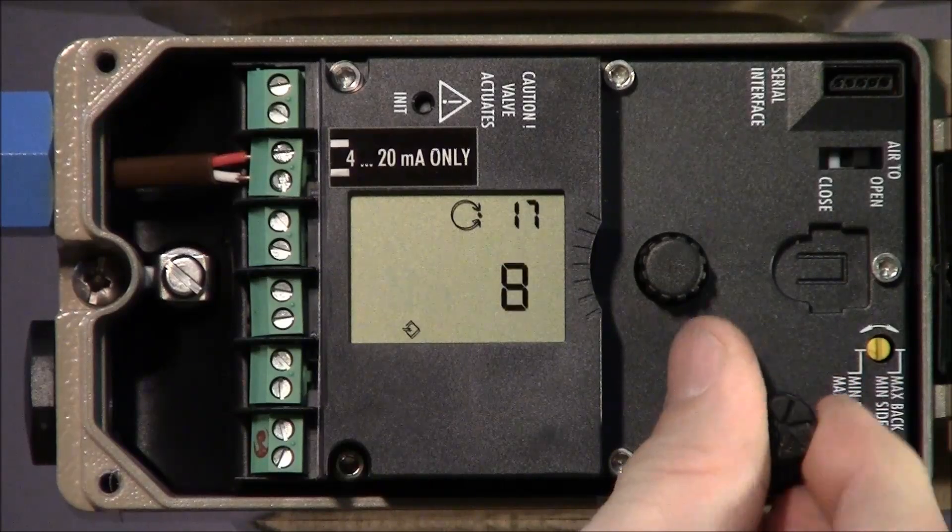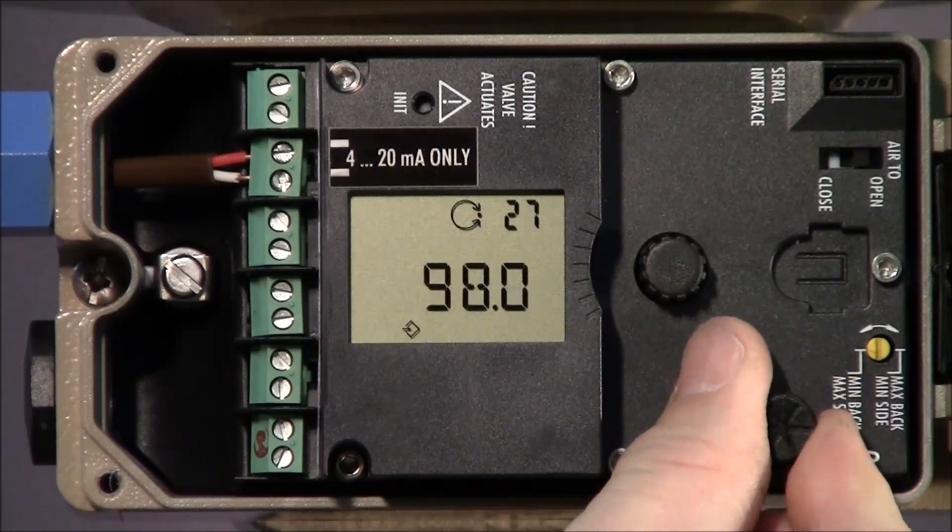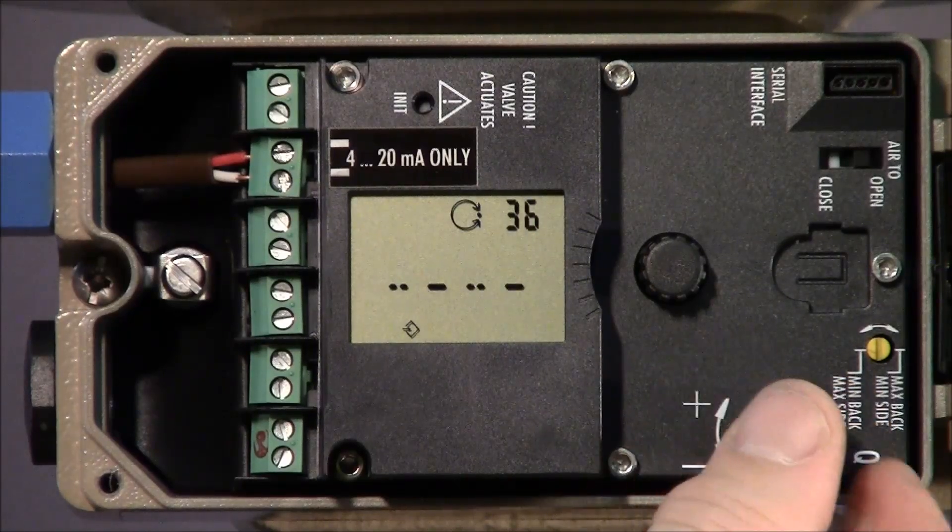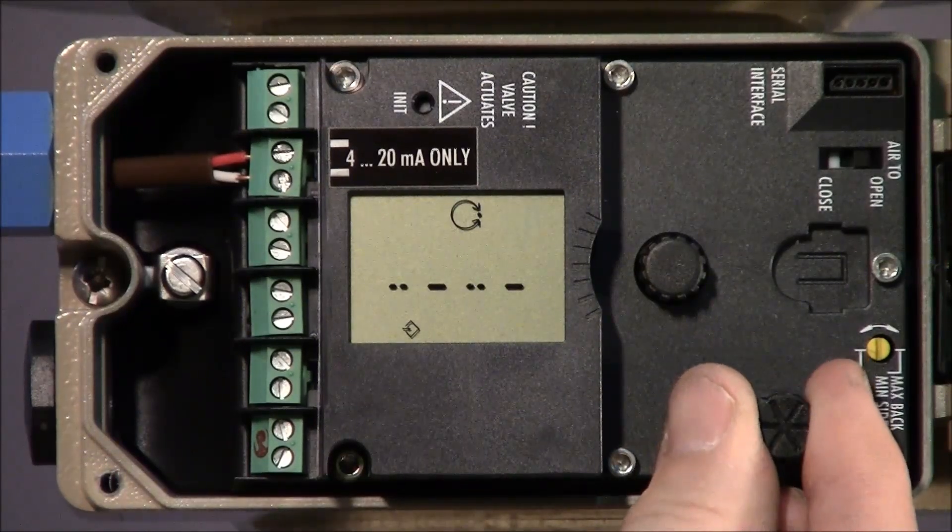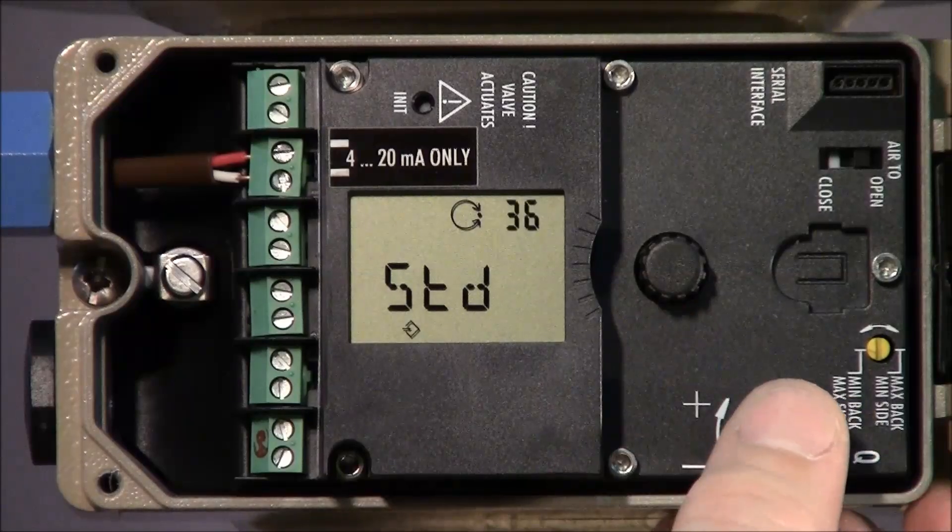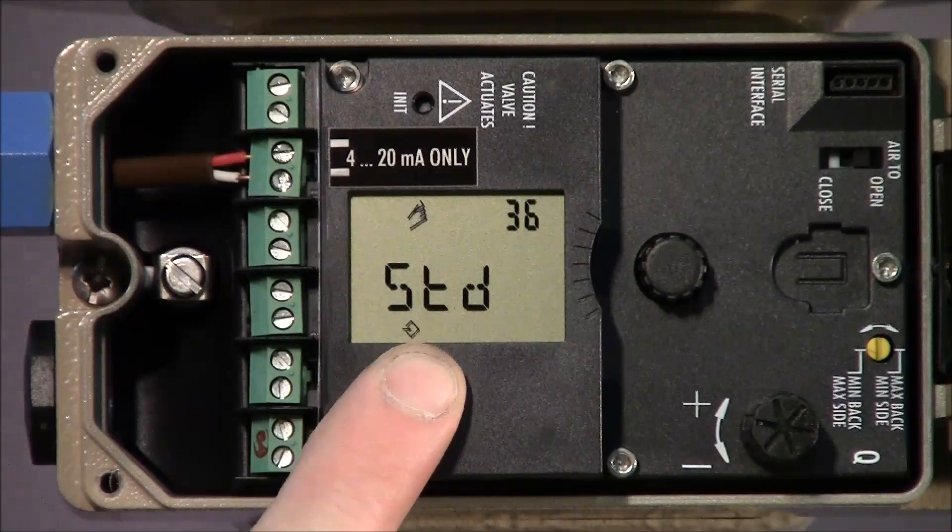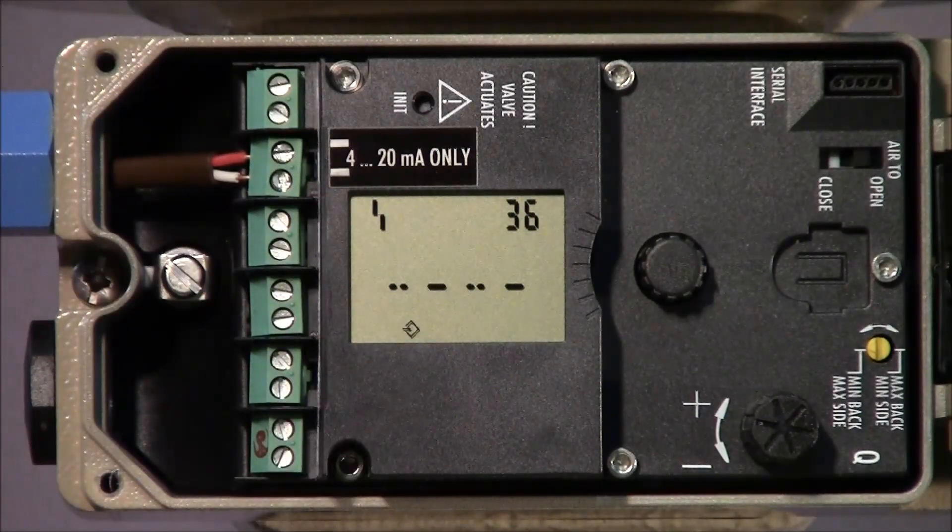Now, we'll go to parameter 36 to reset the positioner to factory defaults. Push the knob and then rotate until it indicates standard and push once again. Wait until standard disappears from the display to complete the factory reset.